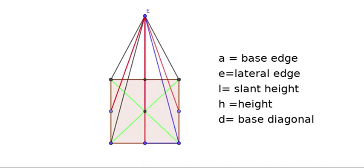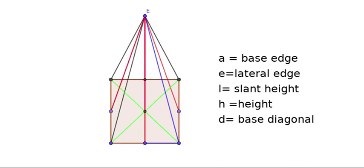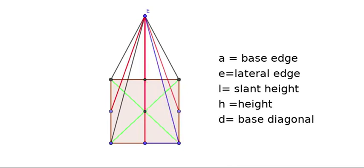Then one more right triangle: its sides are the height (H), half of the base edge (A/2), and the hypotenuse is the slant height (L). And one more right triangle with sides: height (H), half of the diagonal (D/2), and the lateral edge (E) as the hypotenuse.